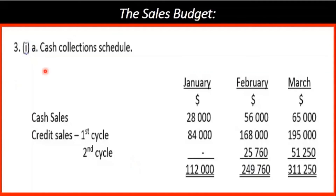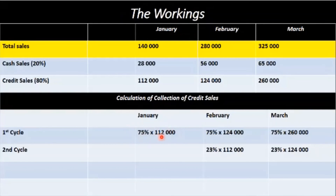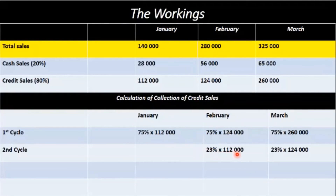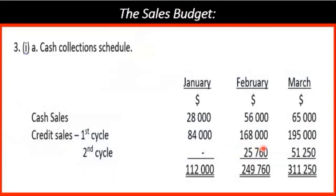The cash collection schedule covers January, February, and March. The cash sales come directly into the top row. Then we have the current month's collections — the first cycle, 75 percent — which we put in here; for example, $84,000. The second cycle, 23 percent, comes in the next column. The $168,000 is from the first cycle of 75 percent here. We also mark 75 percent and 23 percent for clarity. So we get $195,000, $51,258, and similar figures, then we add down to get our total collections: $202,026, $947, and so on.